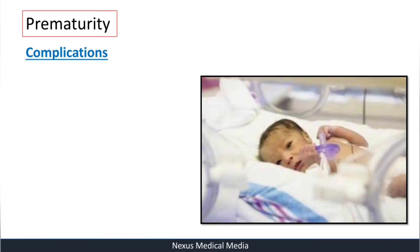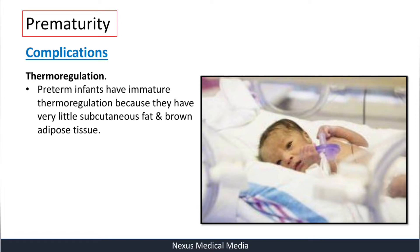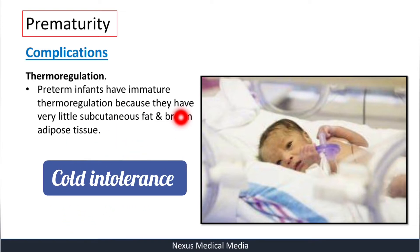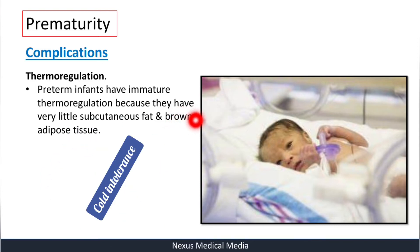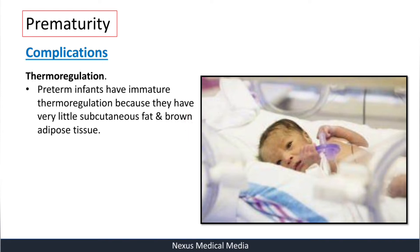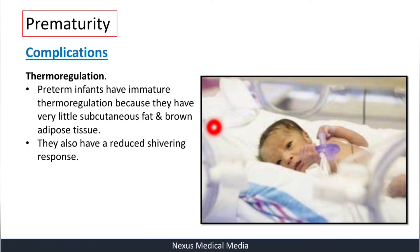The first complication is thermoregulation disorder. Preterm infants have immature thermoregulation because they have very little subcutaneous fat and brown adipose tissue, which play a role in insulation. They get cold easily and need an artificial heating system. They also have a reduced shivering response — shivering normally generates heat, but premature infants lack this response.